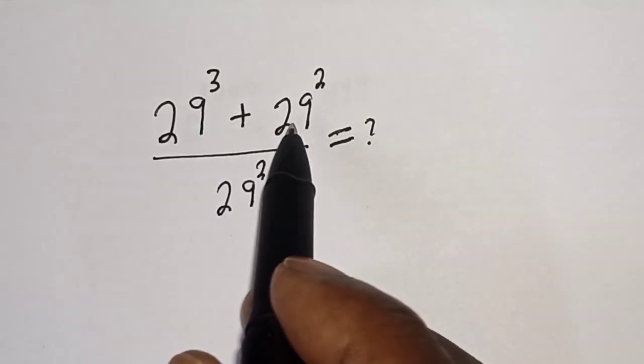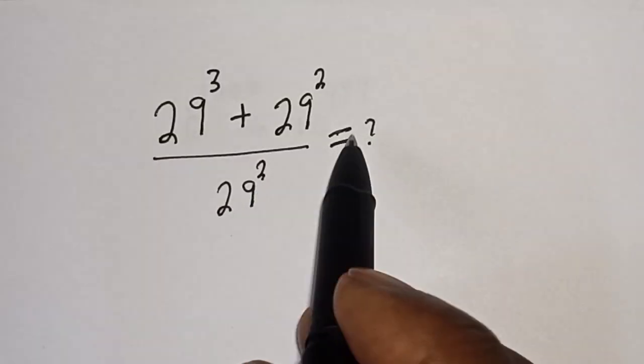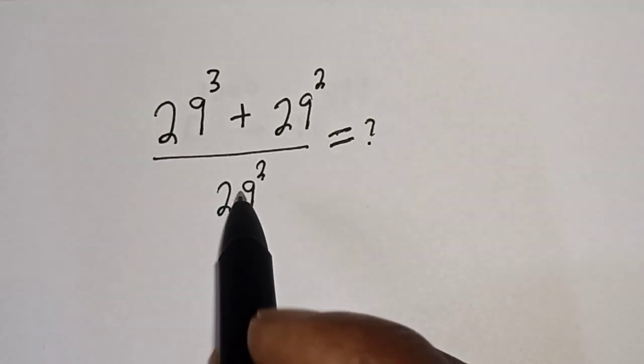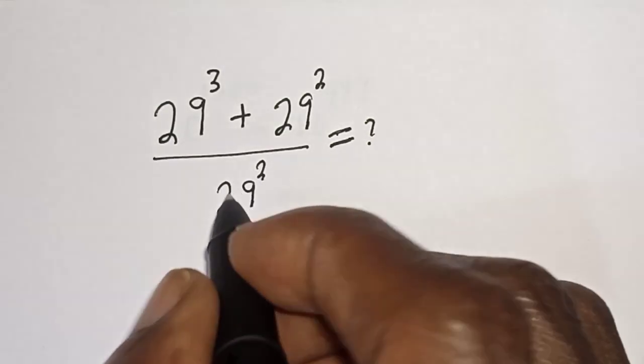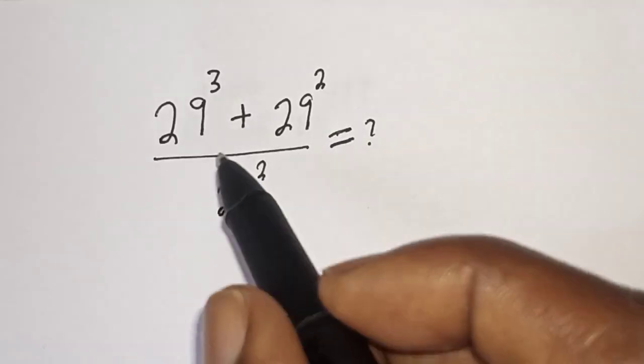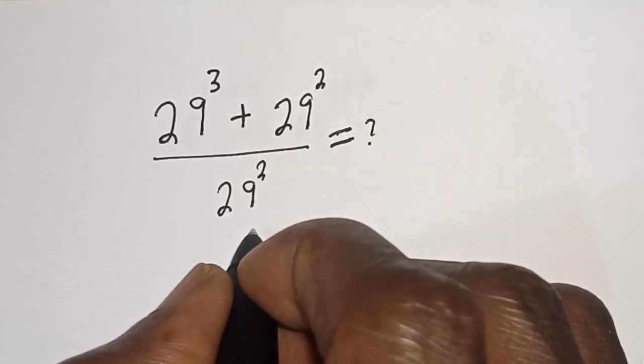29 raised to power 3 plus 29 squared over 29 squared is equal to what? Hi everyone, welcome to my class. In this class we quickly want to simplify this nice math problem, but before we proceed please don't forget to like, share, comment and subscribe. Solution: